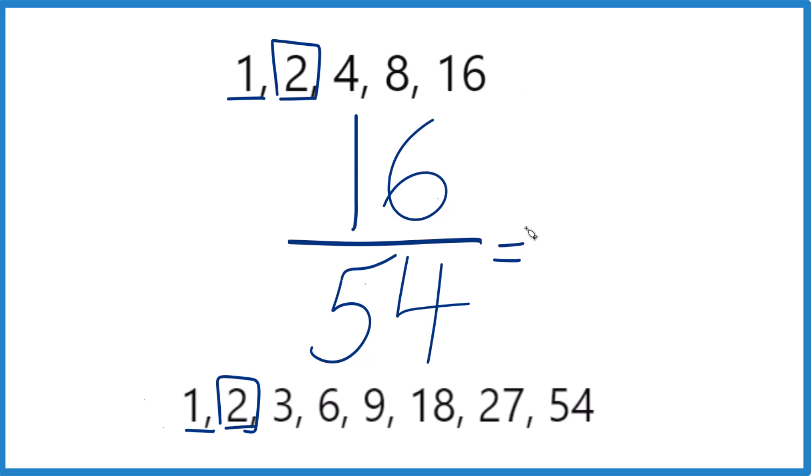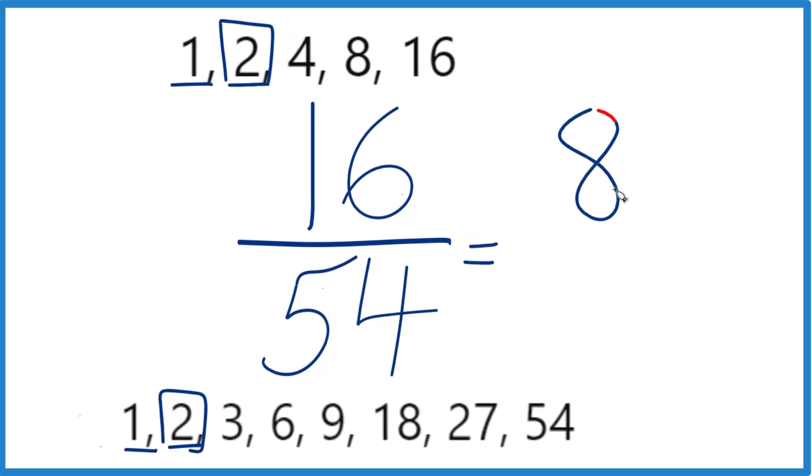So we divide 16 by 2, and we get 8. 8 times 2 is 16. Divide 54 by 2, we get 27.